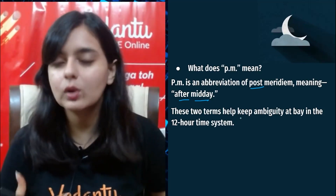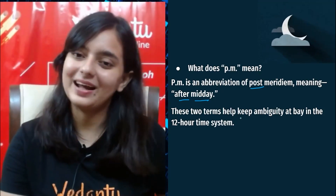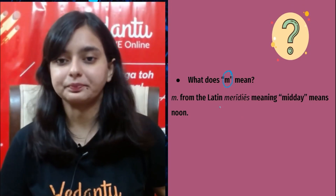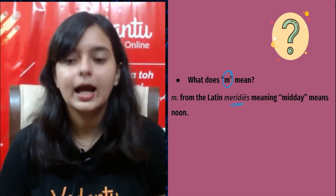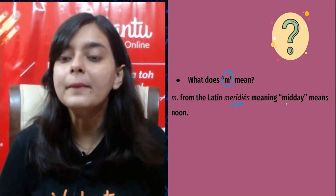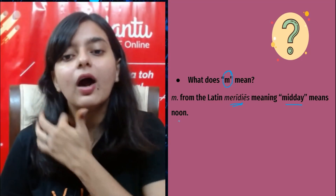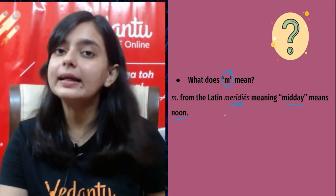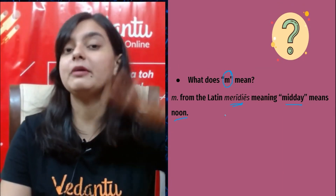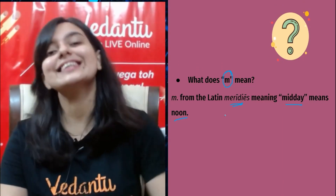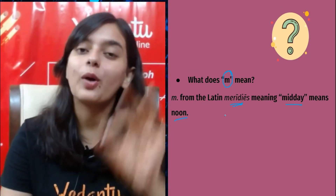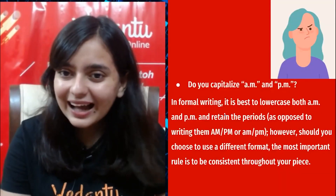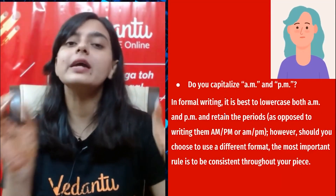What does M specifically mean? M comes from the Latin meridies, which means midday or noon. So that's why AM — ante meridiem — means before midday, and PM — post meridiem — means after midday. M specifically refers to midday.